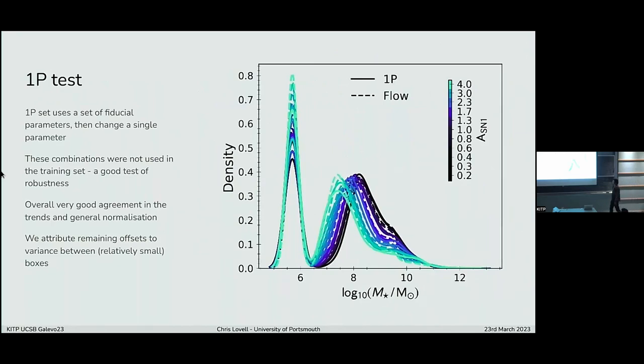So we built this model, but how do we actually know that it's working? A really nice one that we can do is compare to the 1P set. This is a set of CAMEL's simulations where you set everything else to fiducial parameters and you just change a single parameter. These are combinations of parameters that weren't included in the training set. The dashed lines here are the predictions from the flow and the solid lines are the 1P set. The general trend is in very good agreement. We think we can attribute slight differences to remaining offsets being variants between the boxes. Different initial conditions and different random seeds. Essentially the overall trends are reproduced really well.